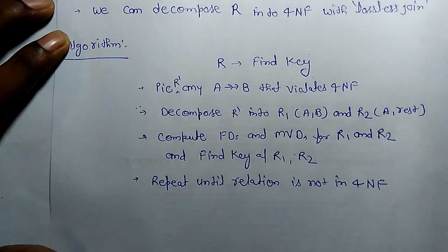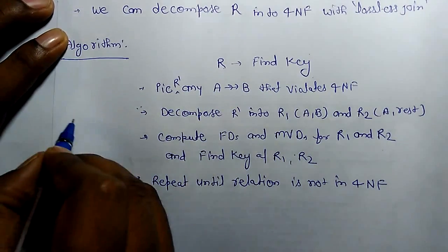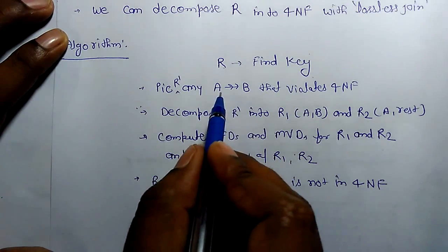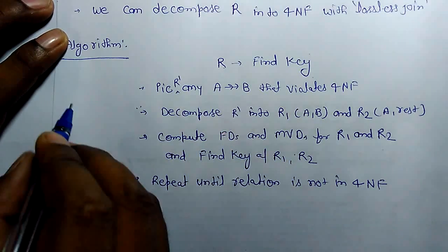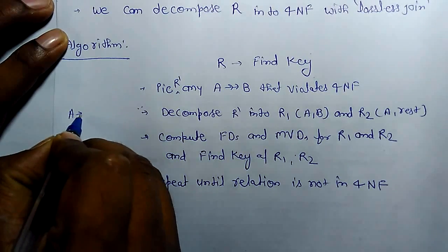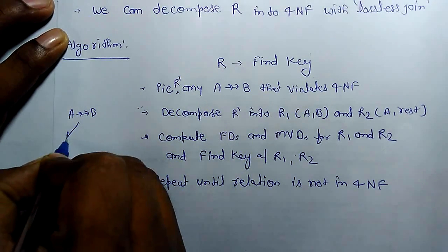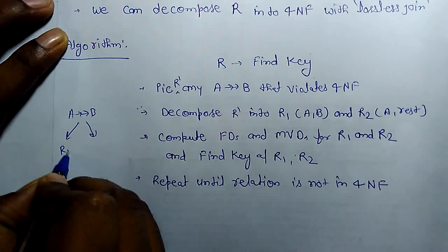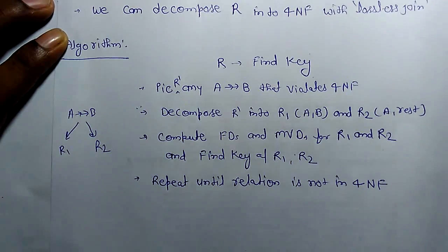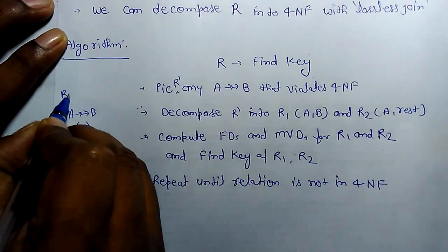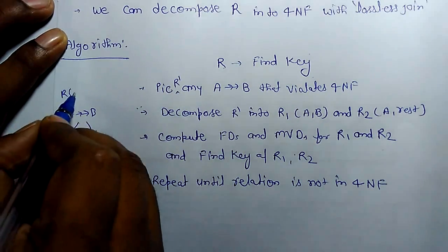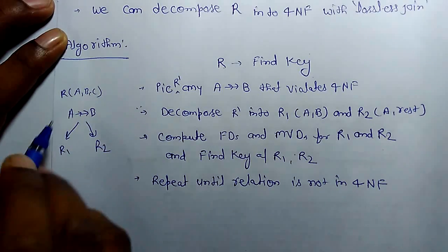we decompose R. That relation A multivalue determines B, this relation we decompose into R1 and R2. Let's take one example. In this same way, see if there is a relation R and this multivalue dependency holds and it violates the 4NF,